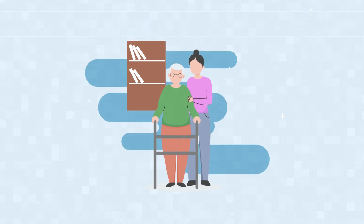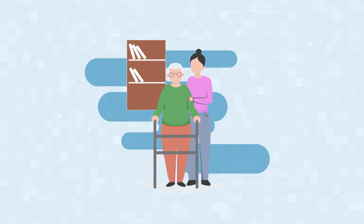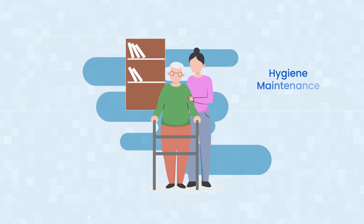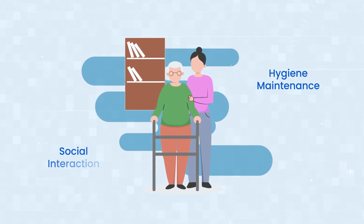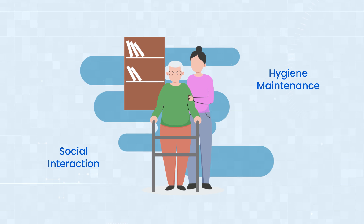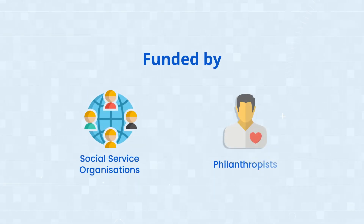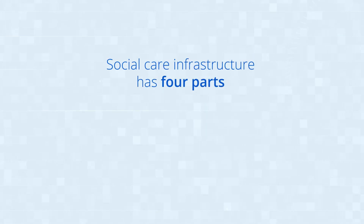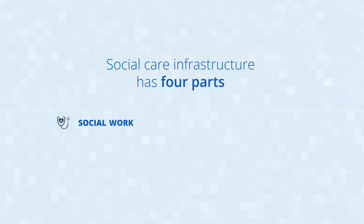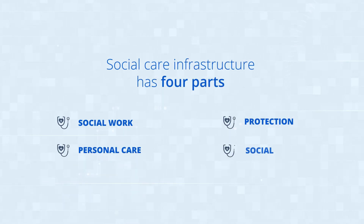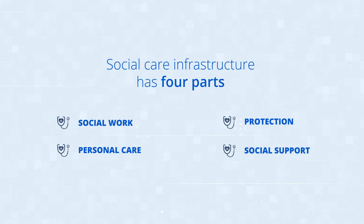Social care is concerned with multiple areas of daily life including hygiene maintenance and social interaction. It's funded by social service organizations and philanthropists. Social care infrastructure has four parts: social work, personal care, protection and social support.